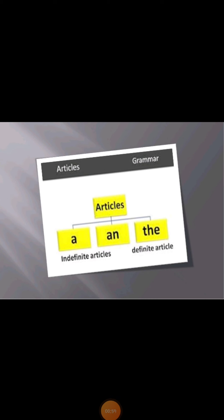There are two types of articles: indefinite articles and definite articles. A and an are indefinite articles, and the is a definite article.